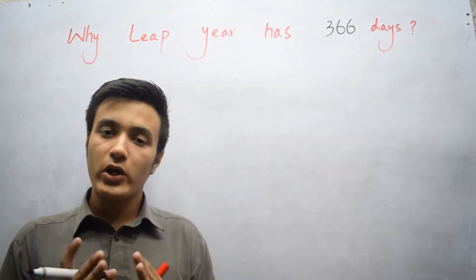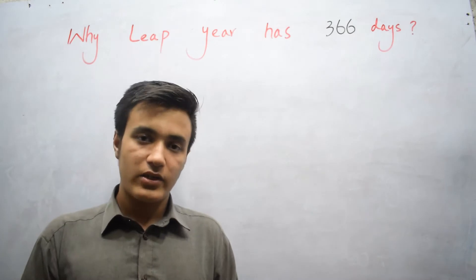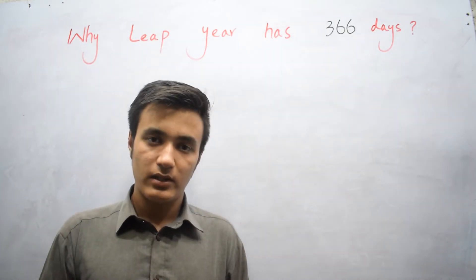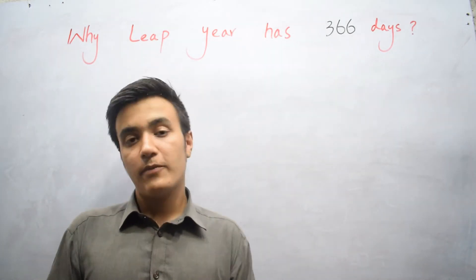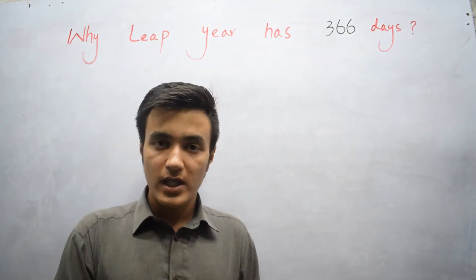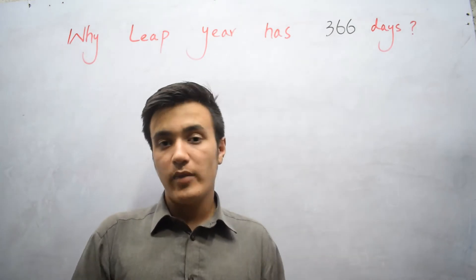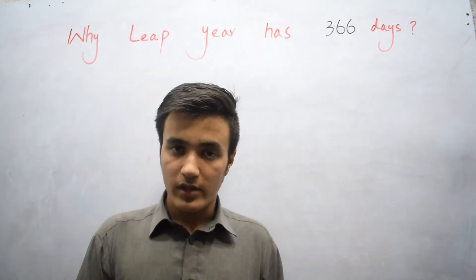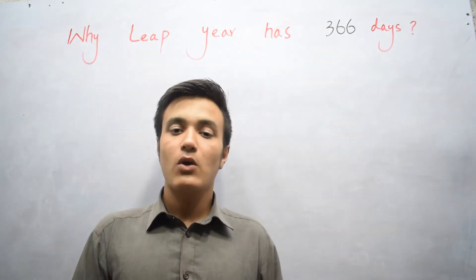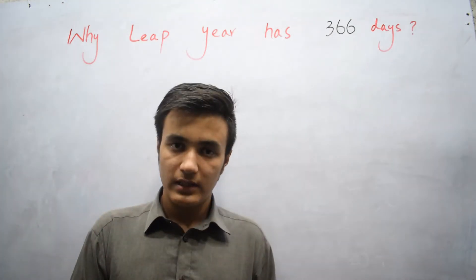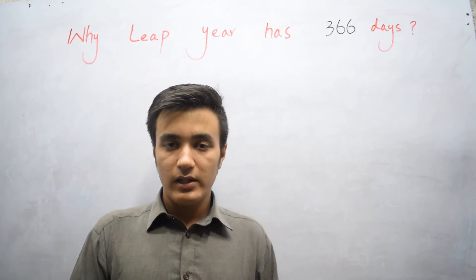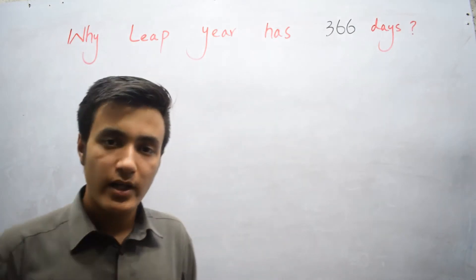The exact time in which the Earth completes its revolution is 365 days and 6 hours. But we ignore those 6 hours. After 4 years, those 6 hours add up and make 24 hours, which equals 1 day.